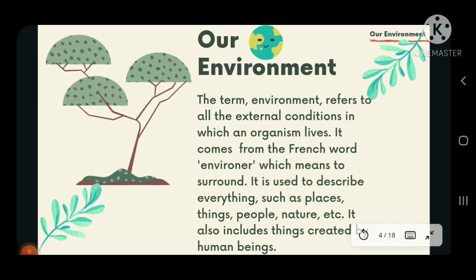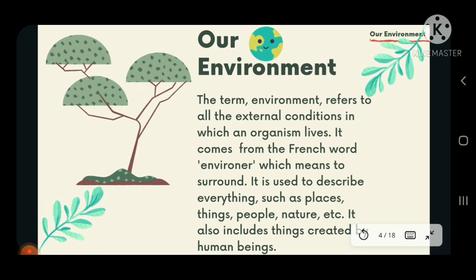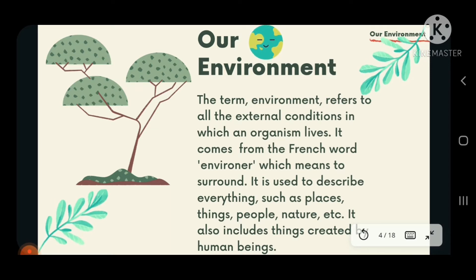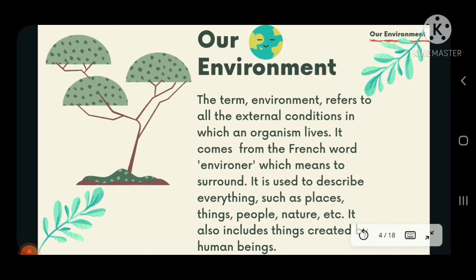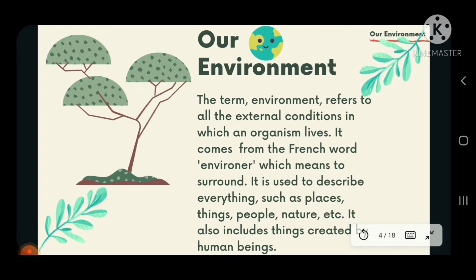The term environment refers to all the external conditions in which an organism lives. It comes from the French word 'environment' which means to surround. It is used to describe everything such as places, things, people, nature, etc. It also includes things created by human beings. So our surrounding is our environment, and it includes all the things which are created by nature as well as by human beings.